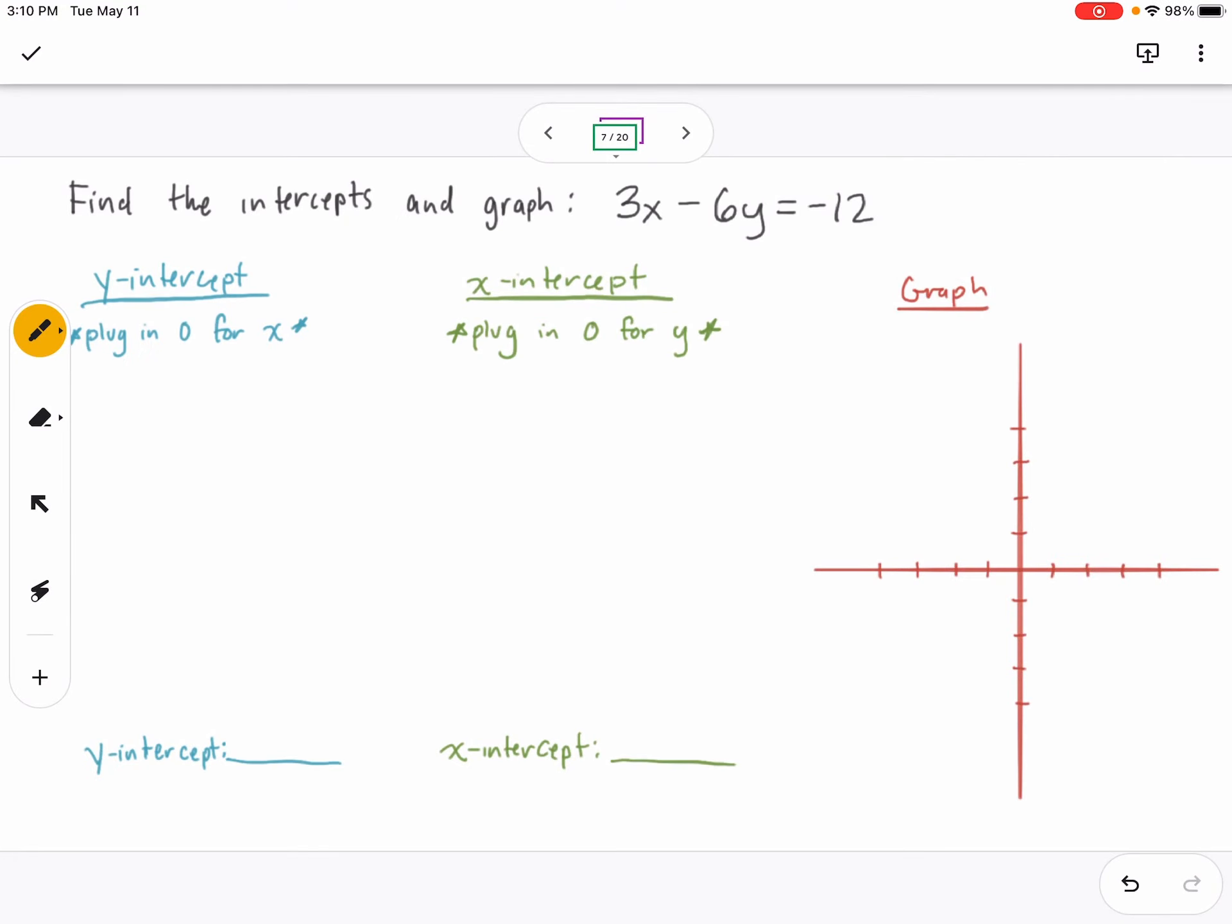All right, so here I'm asked to find the intercepts and graph this equation. This is in standard form, which means there's a number times x plus a number times y equals a number. One of the ways we can graph it is by finding the intercepts.